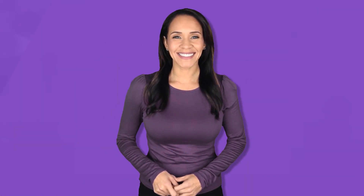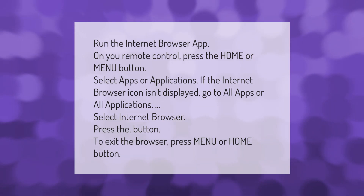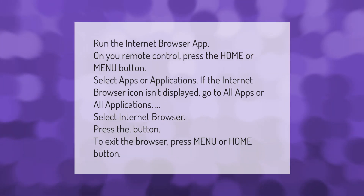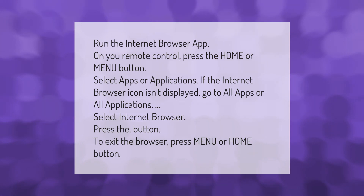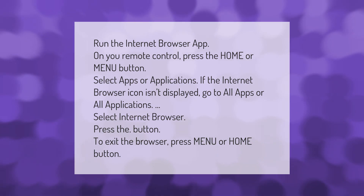To run the internet browser app on Roku, use your remote control and press the Home or Menu button. Select Apps or Applications. If the internet browser icon isn't displayed, go to All Apps or All Applications and select Internet Browser. Press the button to exit the browser, then press the Menu or Home button.